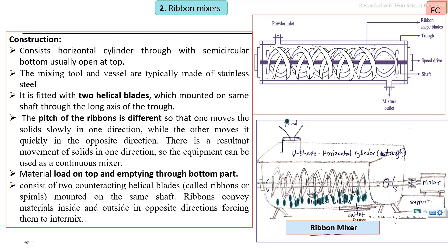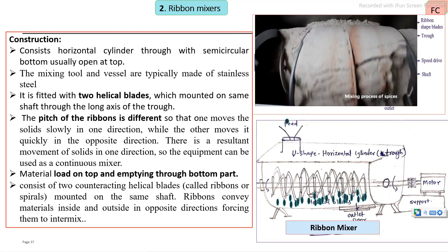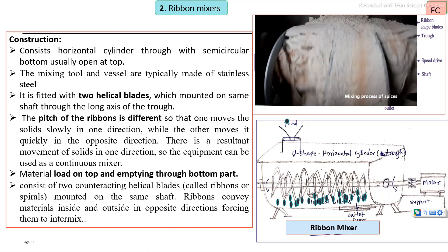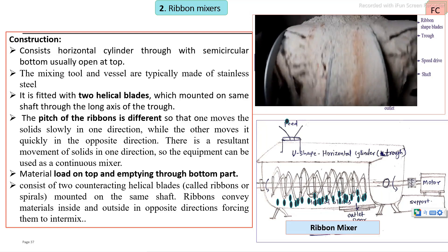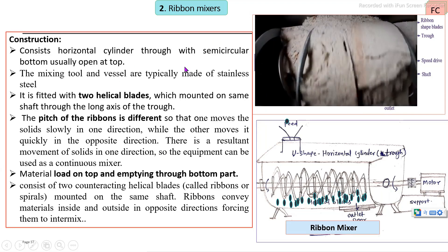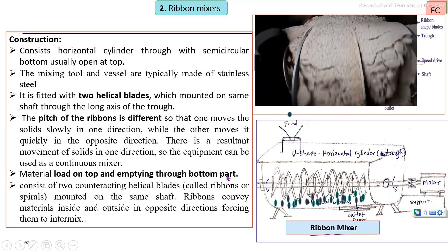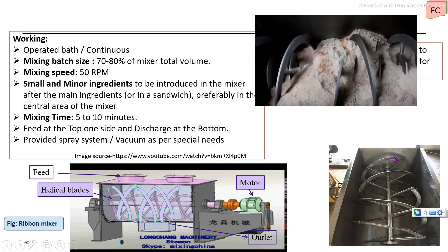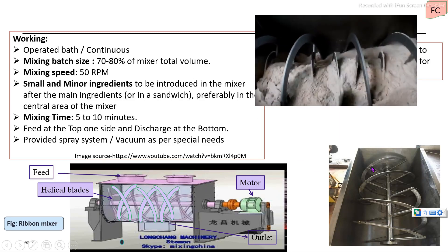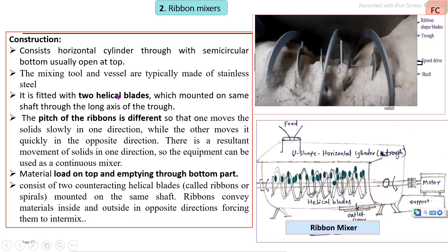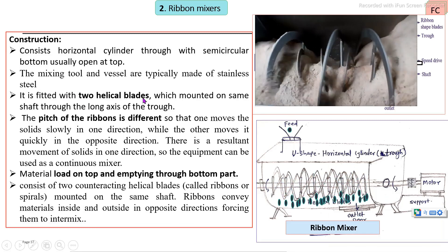The second mixer is the ribbon mixer — very popular for mixing. The main construction of the ribbon mixer consists of a cylindrical trough with an internal central shaft provided with helical blades. These are special designs of helical blades.